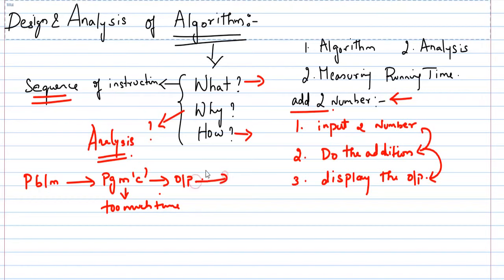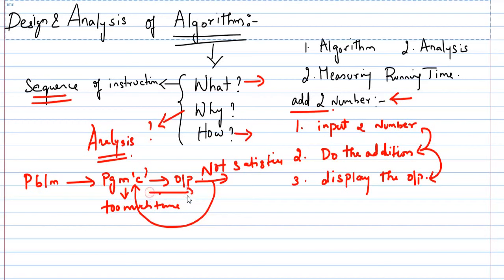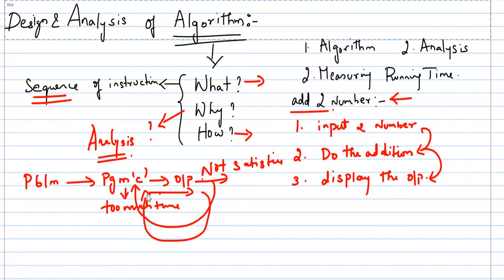In that case, you cannot go and change your code again. Say for example, after finding the output, I am not satisfied with the output. So what I need to do — I need to go back again and change the complete code. You are not satisfied with the program, not satisfied with the output. It may take too much time, the output may not be proper, you cannot correct the solution. If the output is not satisfactory, you need to update the code and find the output again.